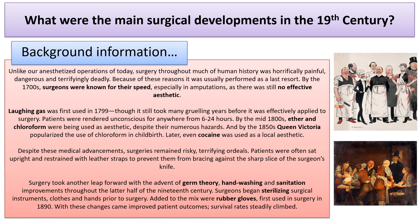Patients were rendered unconscious for anywhere between 6 to 24 hours. By the mid-1800s, ether and chloroform were being used as anaesthetic, despite their numerous hazards. And by the 1850s, Queen Victoria popularised the use of chloroform in childbirth. Later, even cocaine was used as a local anaesthetic.